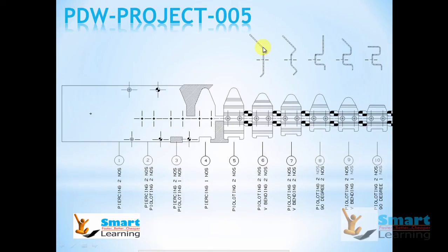In 6th station we will be doing 2 V bending that is downwards and in 7th station we will be doing 2 V bending again but one upwards and next we will be doing a 90 degree bend.